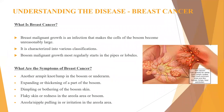First, let's understand the disease. What is breast cancer? Breast cancer is an infection that makes the cells of the breast become unusually large. It is characterized into various classifications and most regularly starts in the pipelines or lobules. Breast cancer can spread to different locations of the body by means of the blood and lymph vessels. Symptoms vary from one individual to another, and certain individuals have no apparent signs or symptoms.